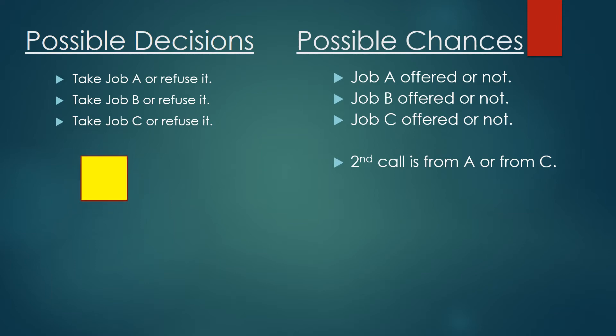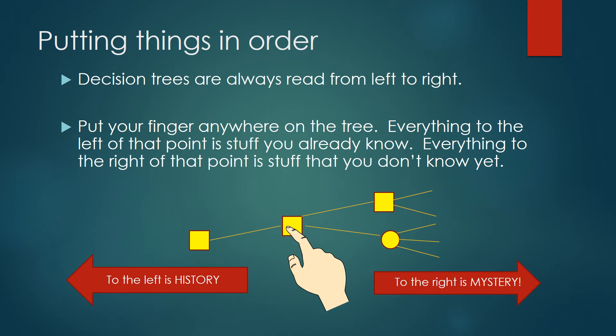What we want to do is to take all of these things and put them together into a decision tree. On that tree we will have some squares. A square always represents a decision that we're making, and we'll have chance events and those will always be represented by circles. A square is where you decide what happens. A circle is where chance decides what happens. And in order to get things in order, you might want to keep this in mind. Decision trees are always read and built from left to right, and if you put your finger anywhere on the tree, then everything to the left of where your finger is at that moment is history. It's stuff that you already know. Everything to the right of where your finger is is mystery. It's the stuff that you don't know yet. So in the picture that we have right here, the finger is on a decision node. The square to the left is something that already happened and you know what you decided. But the square to the right is a decision you'll have to make in the future and you don't know what that decision is yet. The circle represents a chance node, and if you happen to choose the lower branch from where your finger is now, something's going to happen but you don't know what it is yet.